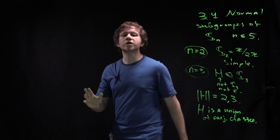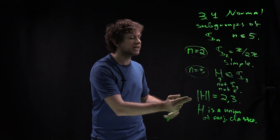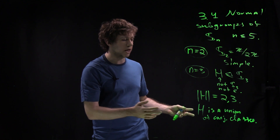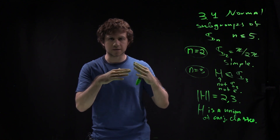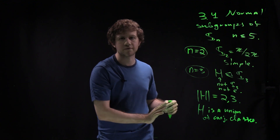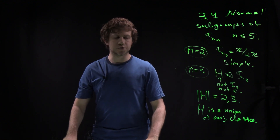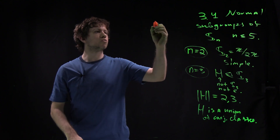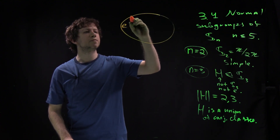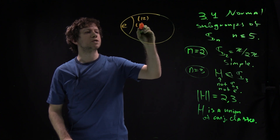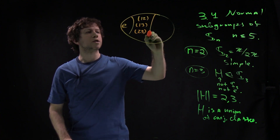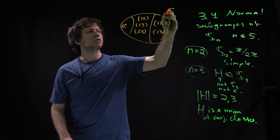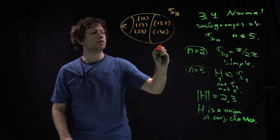The reason is simple: if we conjugate any element in H we get again an element in H, so H must be a union of several conjugacy classes. We can draw the picture of S3 we have seen before: the identity, the transpositions (12), (13), (23), and the three-cycles (123), (132). These are the conjugacy classes of S3.